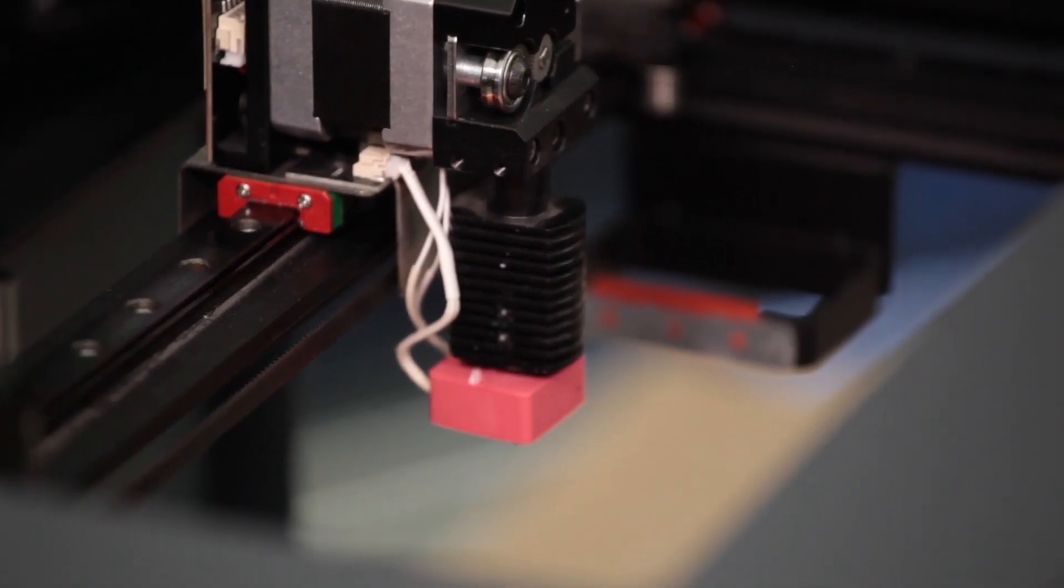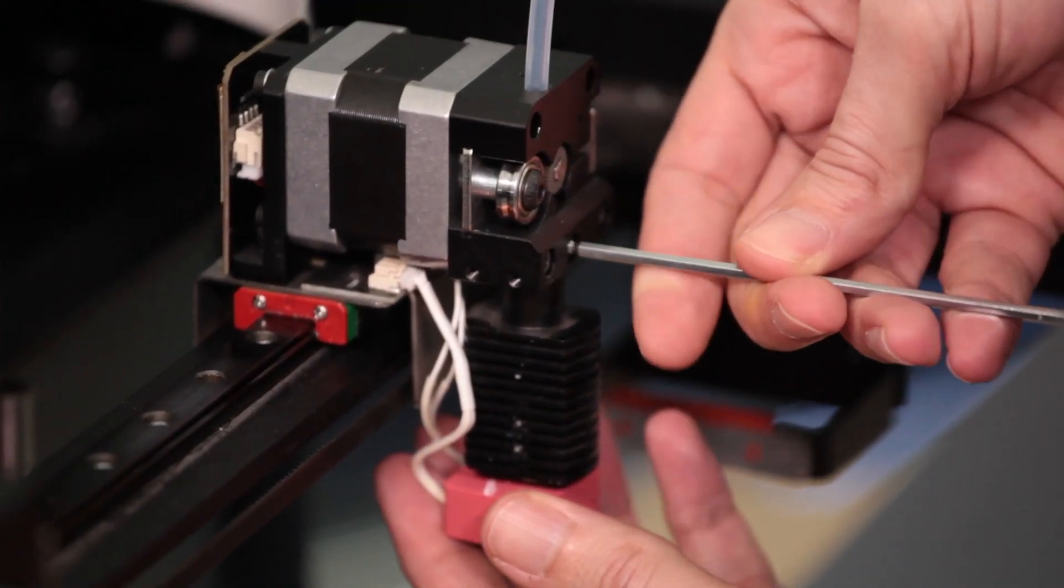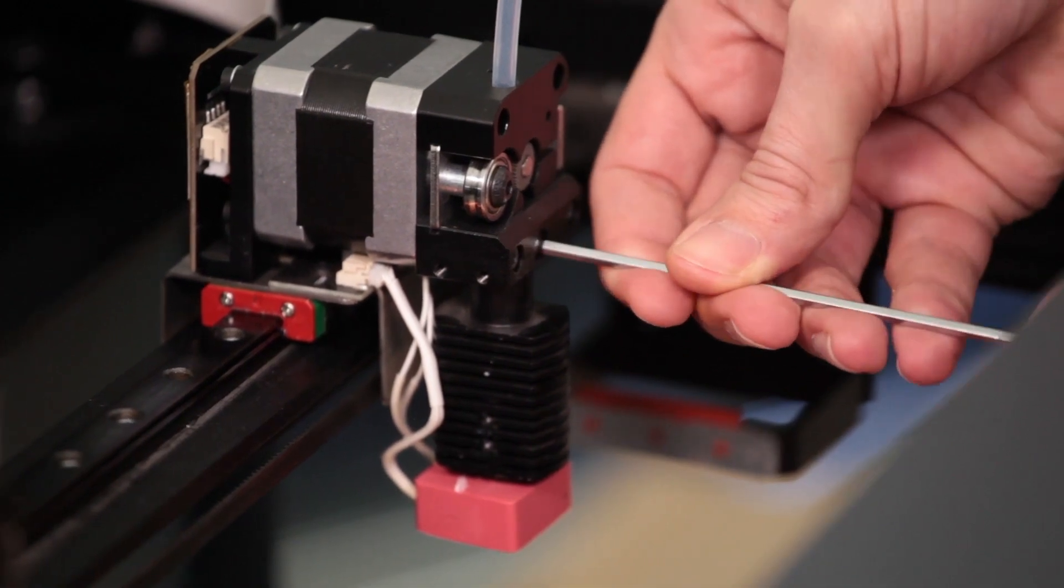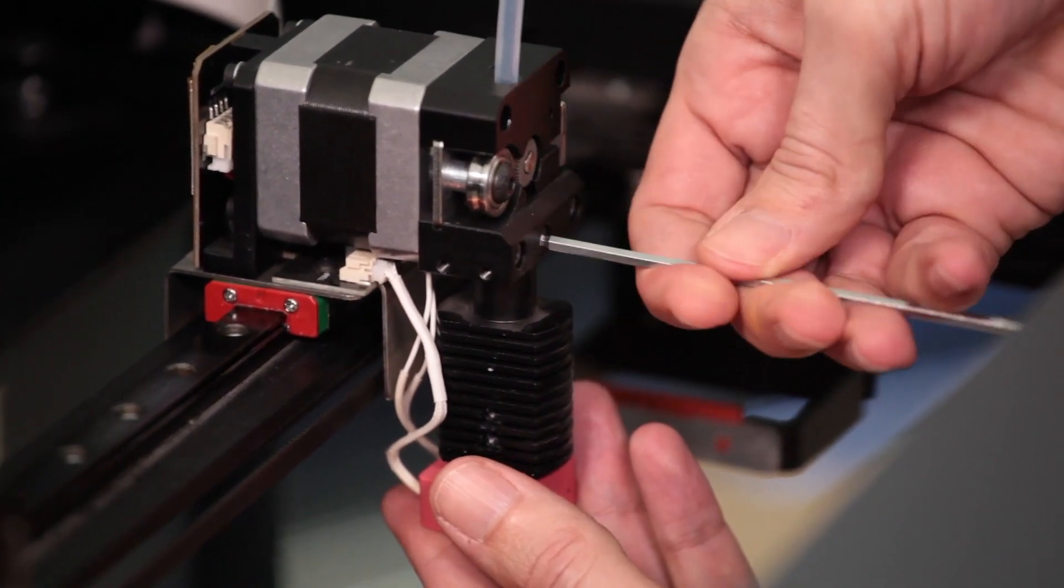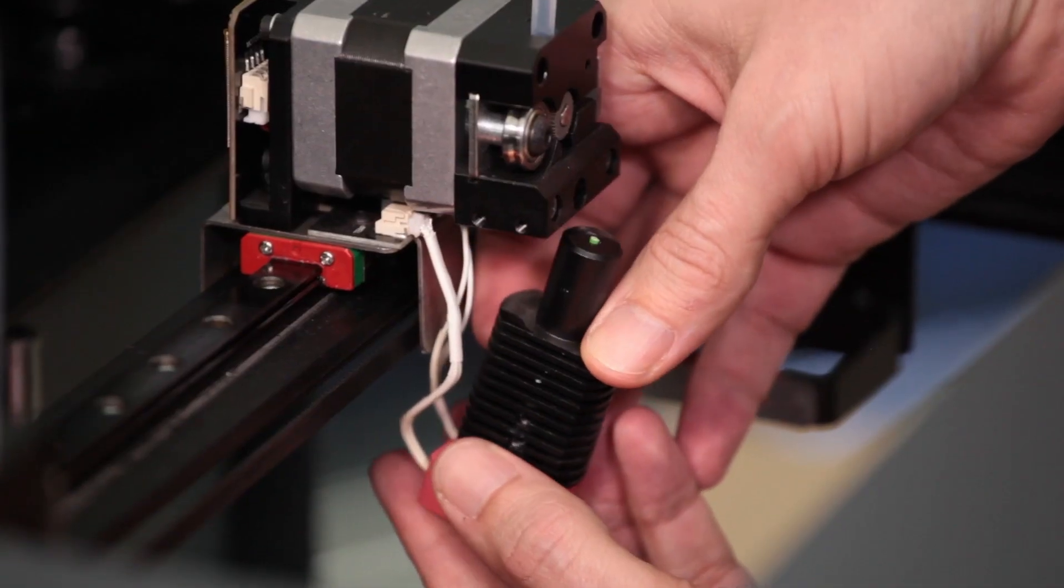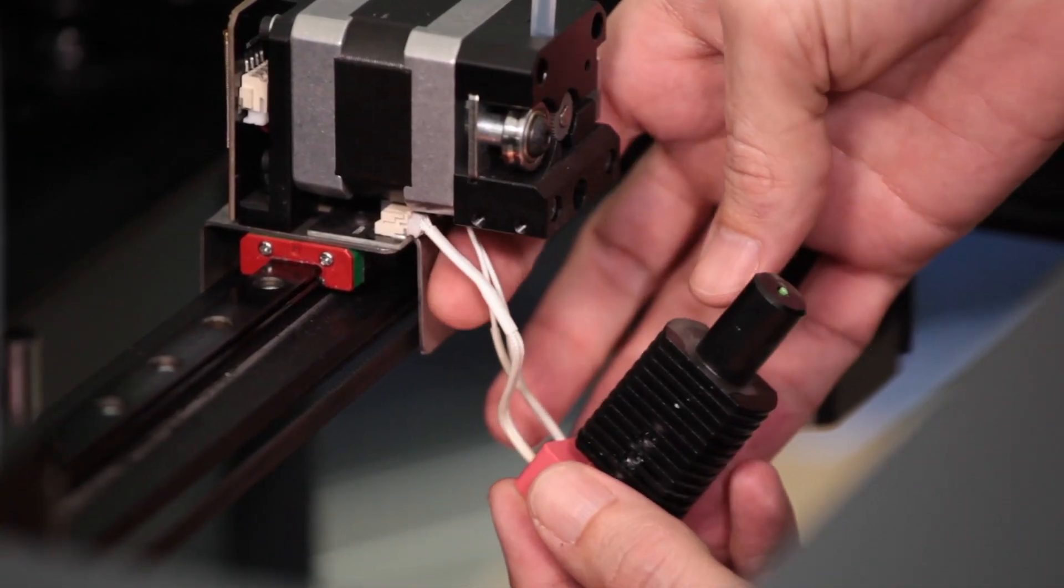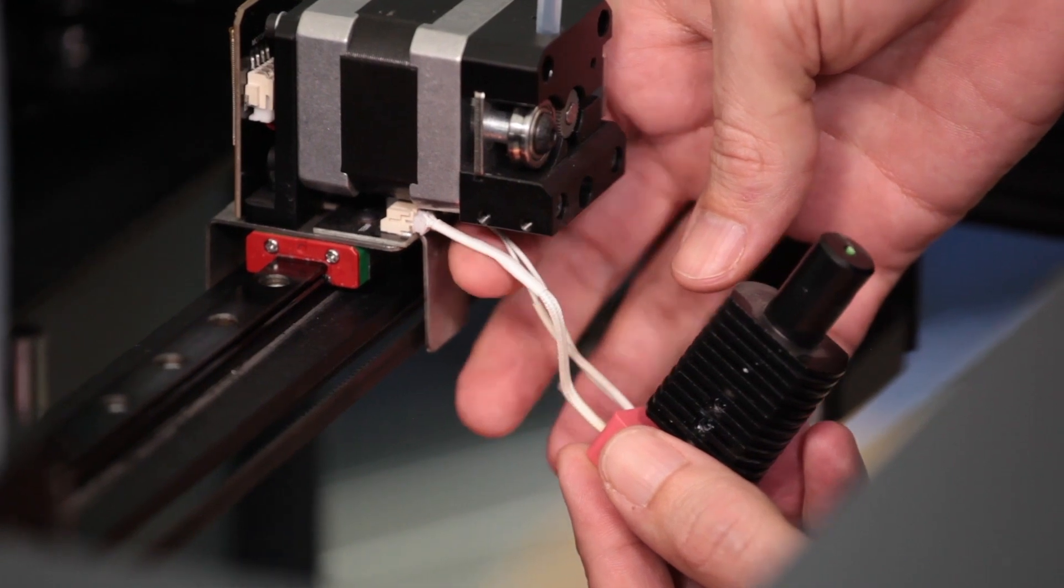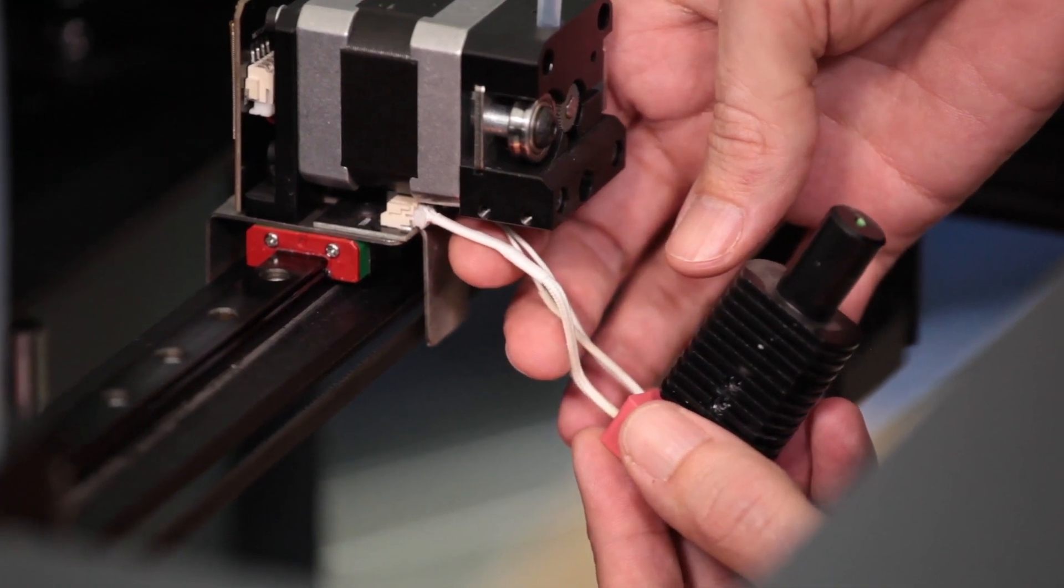Now that we've removed the fan cover, we're going to remove the center screw which holds the hot end into place. Now we can create a little bit of distance for ourselves in order to be able to very carefully remove the two cables connected to the hot end.